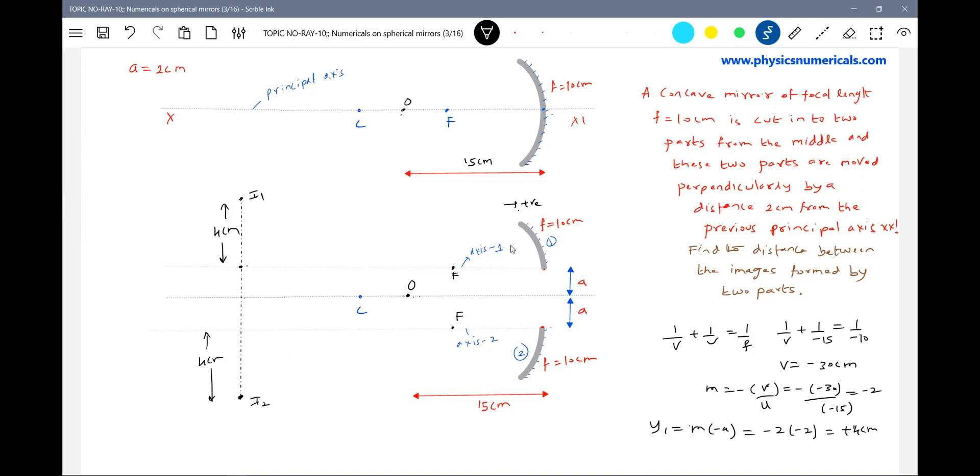Again I'll use the formula: y2 equals m times plus c. What do I mean by minus 4? I should take the position of that image below the axis here. So from this axis, what was the separation? This is equal to 2 centimeters, 2 centimeters. So total distance: 4 plus 2 plus 2 plus 4 equals 12 centimeters.